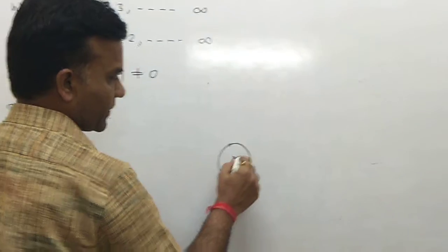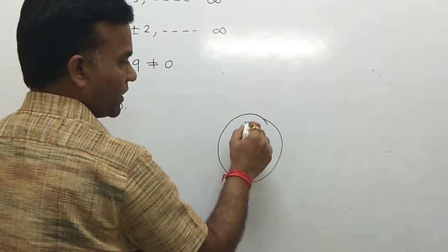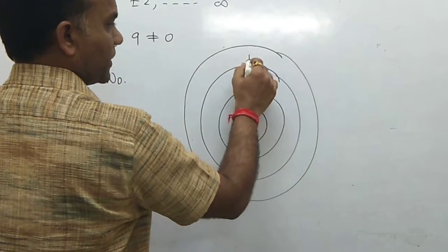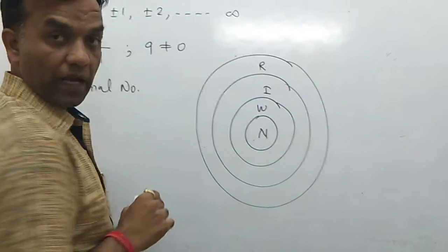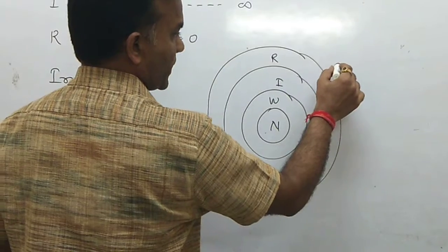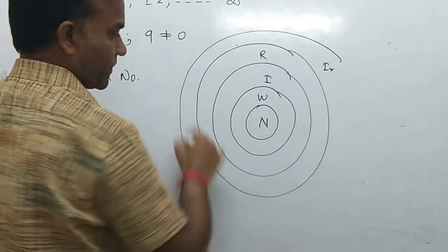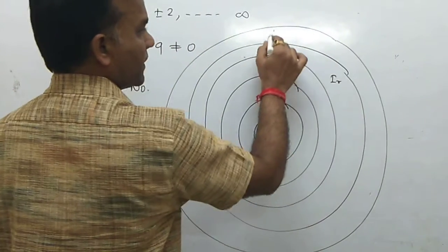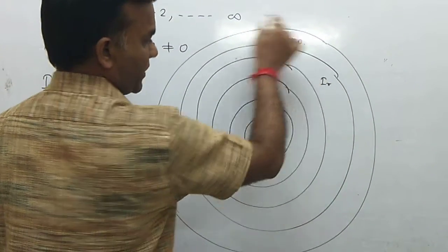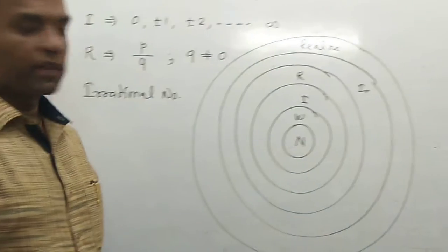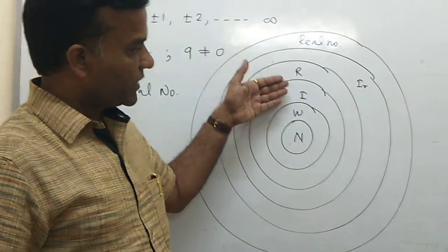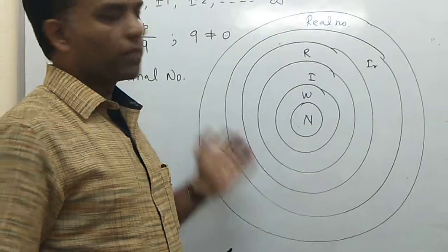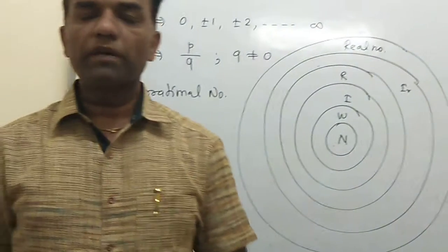So this group — natural numbers, whole numbers, integers, rational numbers, and irrational numbers — all together is called the real number system. This is the bunch of all numbers included in the number system, and we discuss all of these under the real numbers.